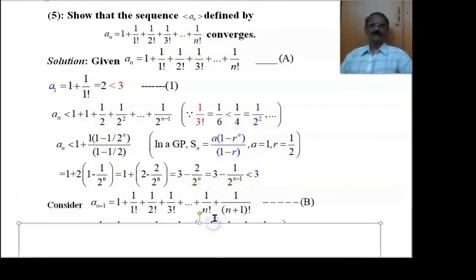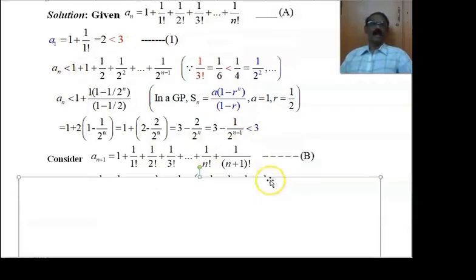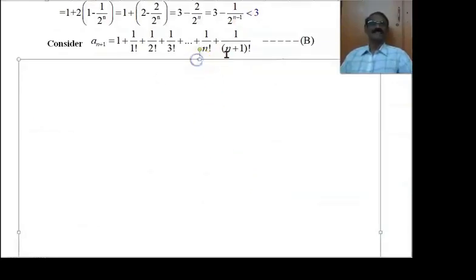Thus, we have shown that a₁ < 3 and aₙ < 3. Now we are going to show that aₙ₊₁ is also less than 3.